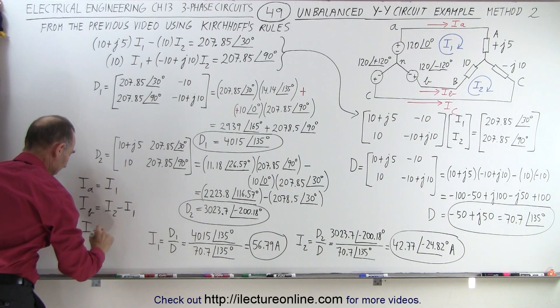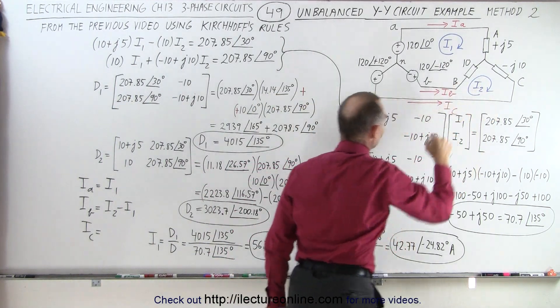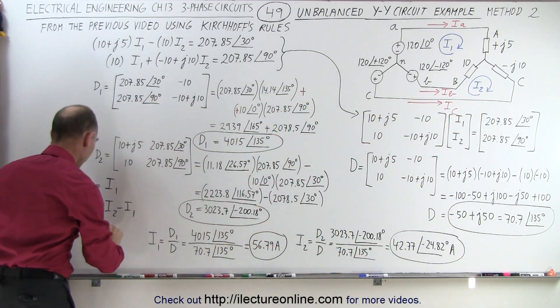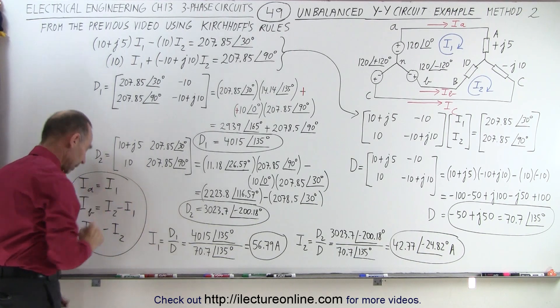And finally Ic is equal to, and notice that Ic is in the opposite direction as I2, so it would be equal to a minus I2 to get the three line currents.